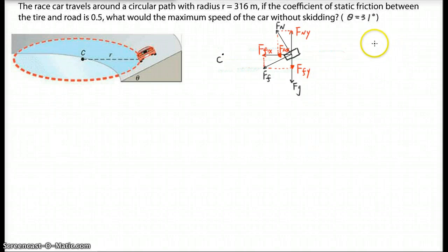And then look at the two directions. One is vertical direction. You can see the car is moving in this plane without moving up and down. So the Y direction, we should have the equation that one force going up, that's Fn Y, should equal the sum of two forces going down. So that's Ff Y plus Fg.